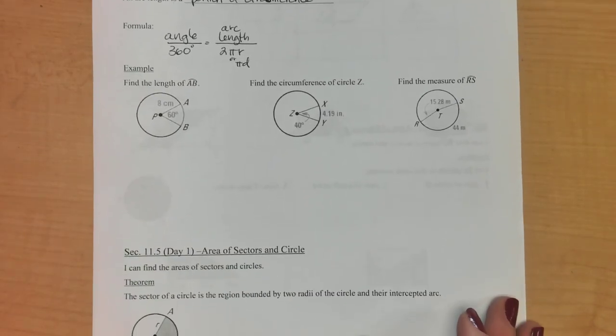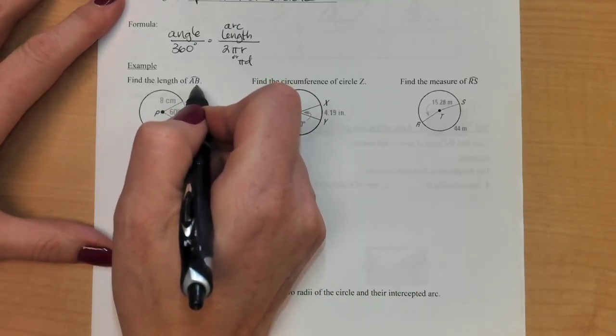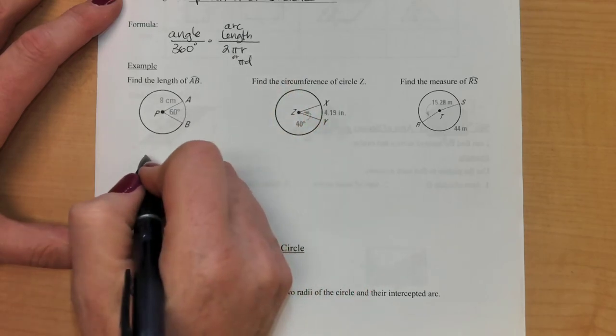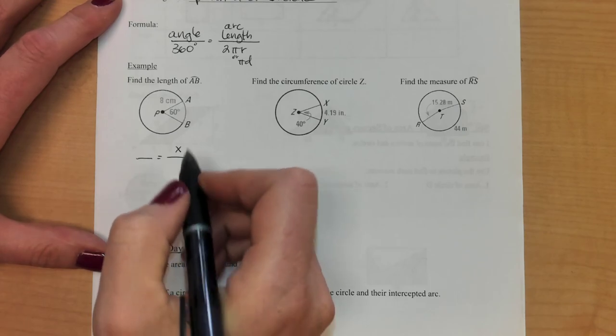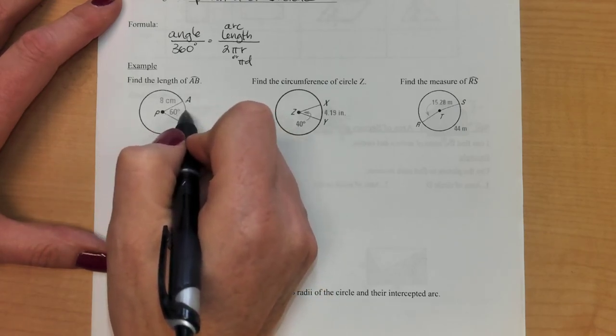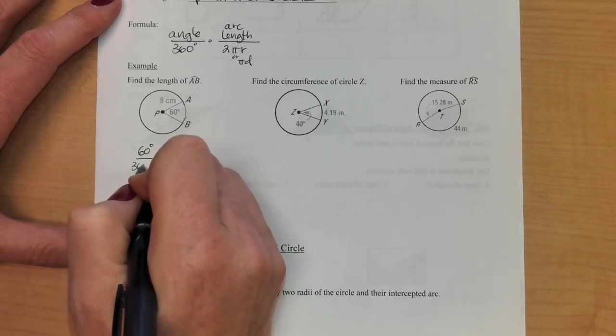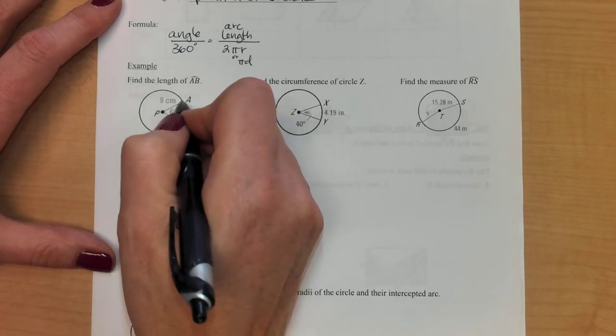So let's use it a couple times so you can see what we're talking about. The first one says find the length of AB. So we're talking about arc length, so right there that's what we're looking for. So when I set up my proportion my x is going to be right there. My 60 degrees goes with that arc. So I'm going to put 60 over 360, and then 2π times my radius which is 8.